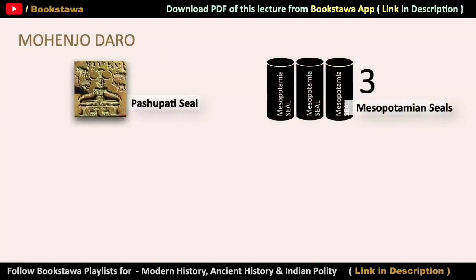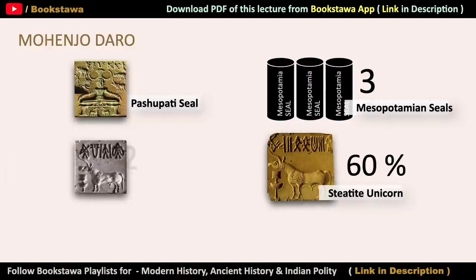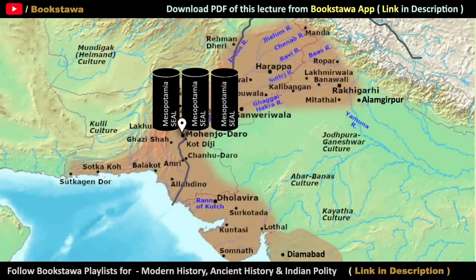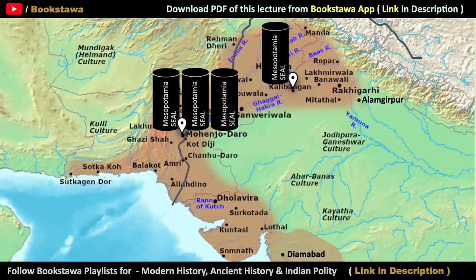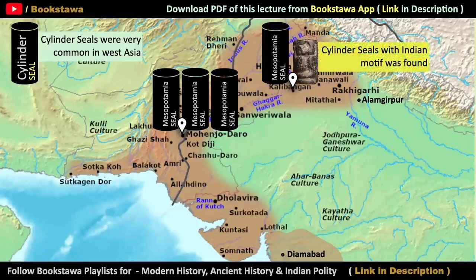In Mohenjo-daro, apart from the Pashupati Seal, three cylindrical Mesopotamian seals have also been found, and 60% of the seals found there are steatite-based unicorn seals. Two more silver unicorn seals have also been found. In Kalibangan, one cylindrical seal of Mesopotamian civilization has been found. Cylindrical seals were very common in West Asia but not so common in the Indus Valley Civilization, where square-shaped seals were mostly common. Still, one cylindrical seal with an Indian motif has been found in Kalibangan, and it belongs to the Indus Valley Civilization.